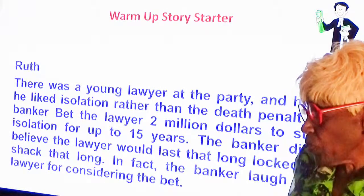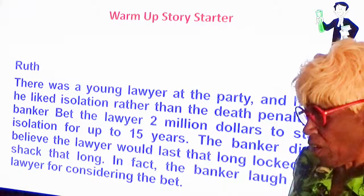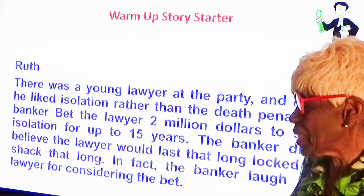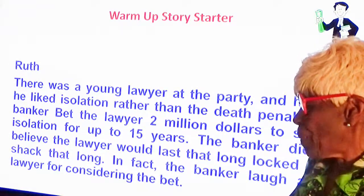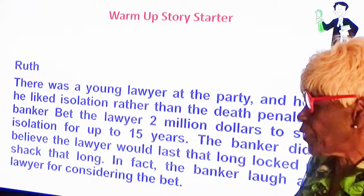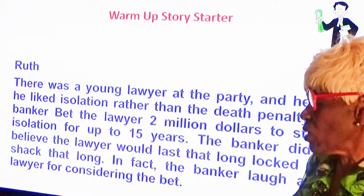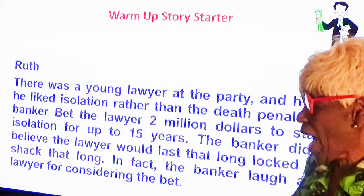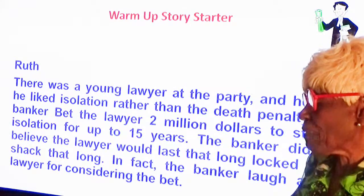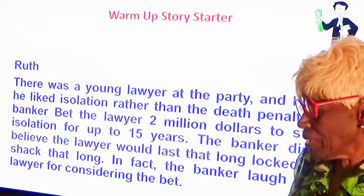Now let's look at Ruth's story starter. 'There was a young lawyer at the party and he said he liked isolation rather than the death penalty. The banker bet the lawyer two million dollars to stay in isolation for up to 15 years. The banker did not believe the lawyer would last that long, locked up in the shack. In fact, the banker laughed at the lawyer for even considering the bet.' Very good.